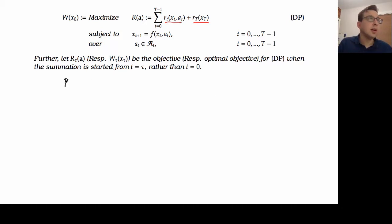So here, r of tau of a is going to be the objective function where we do the sum from tau up until t minus one. And r of little r of t of x of t of a of t plus r of capital T of x of capital T. And sometimes just to make things a little bit more explicit, sometimes we'll also let the note on the state that we started in as well.